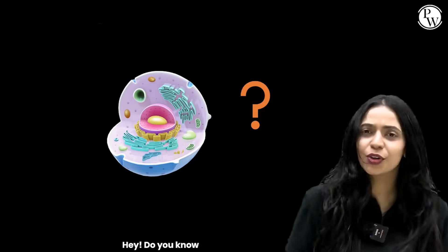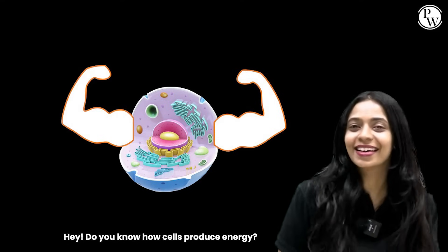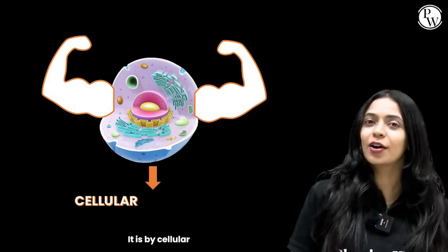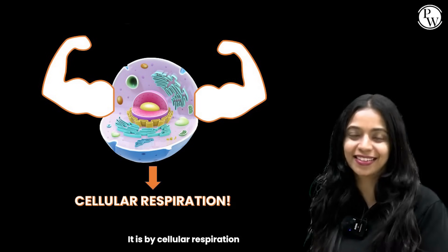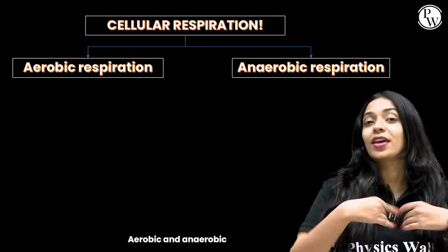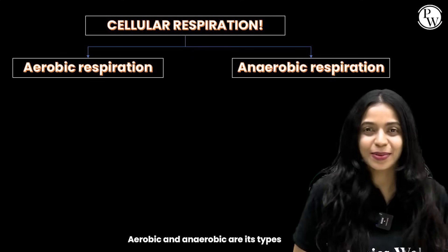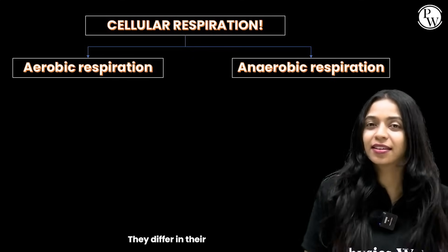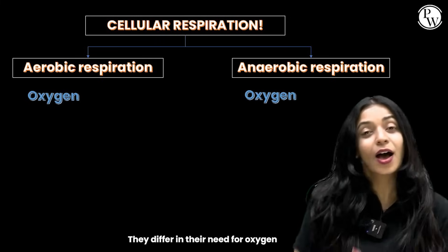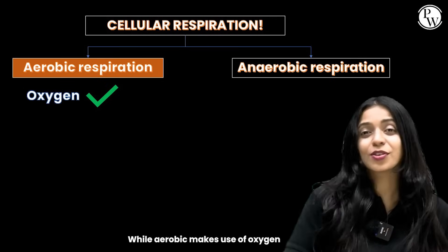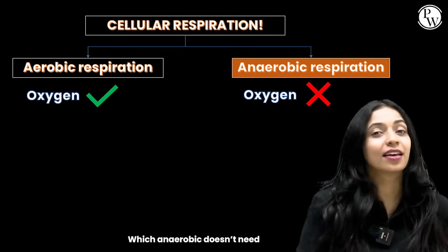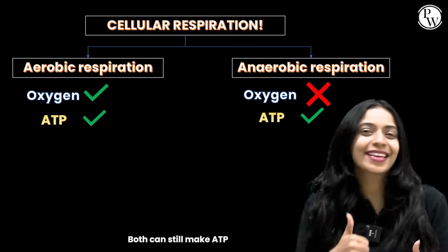Do you know how cells produce energy? It is by cellular respiration. Aerobic and anaerobic are its types. They differ in the need for oxygen. While aerobic makes use of oxygen, anaerobic doesn't need it — but both can still make ATP.